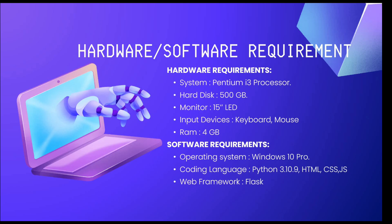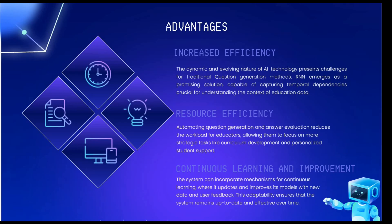For hardware involved in this project, we need a minimum 4GB of RAM to run it. The operating system can be Windows or Mac — both are supported. The website framework we are using is Flask with Python. The main advantage of the proposed system is more accuracy compared to the existing system, resource efficiency using less resources, meaning it can even run on basic systems. And continuous learning — you can improve your learning process using this project.